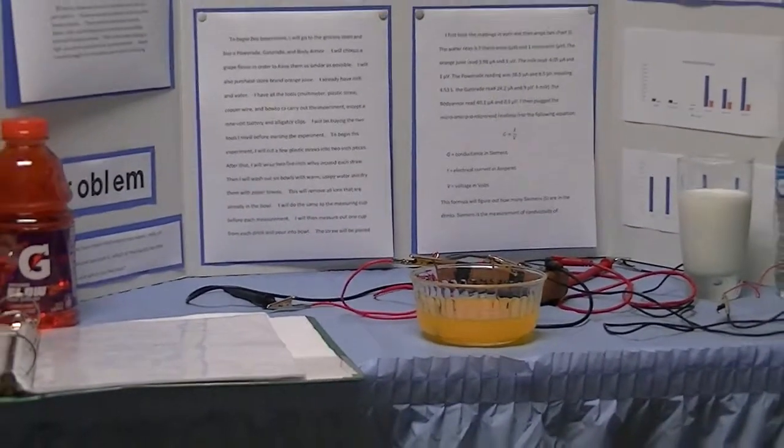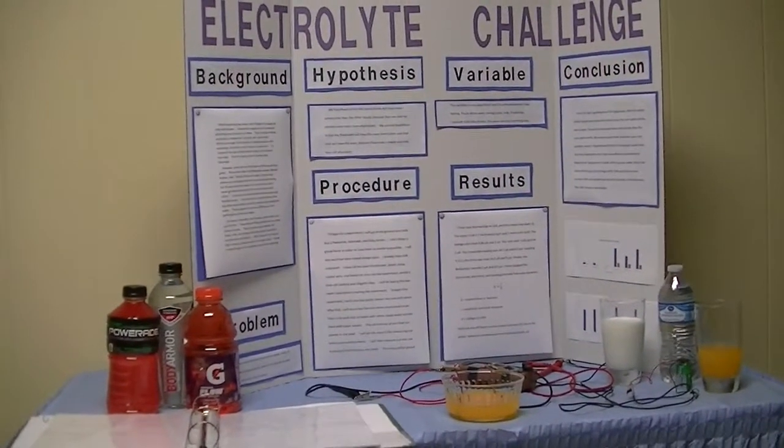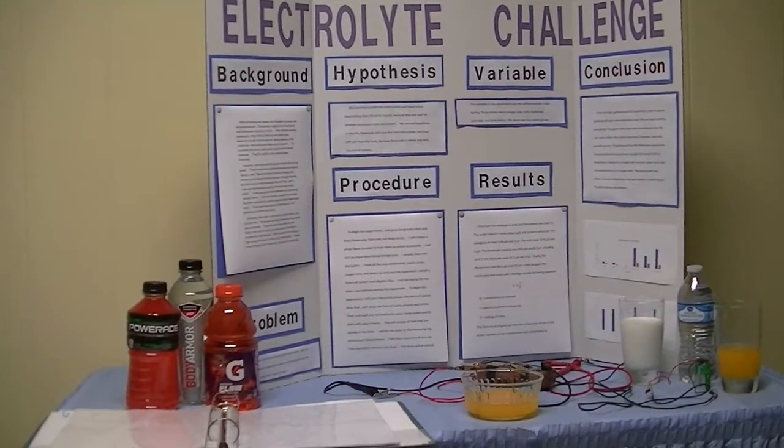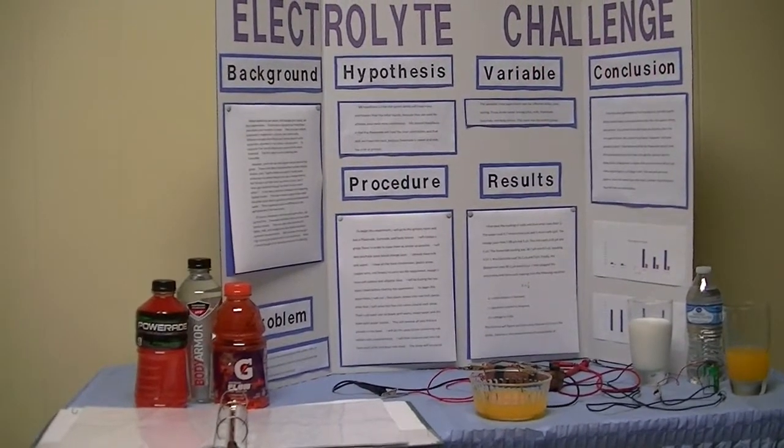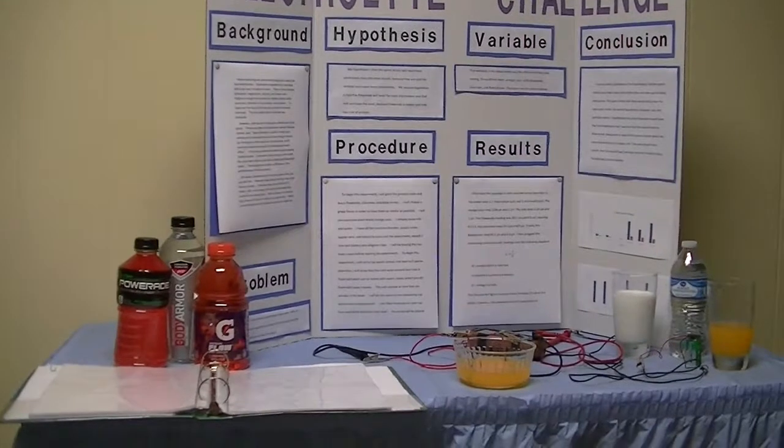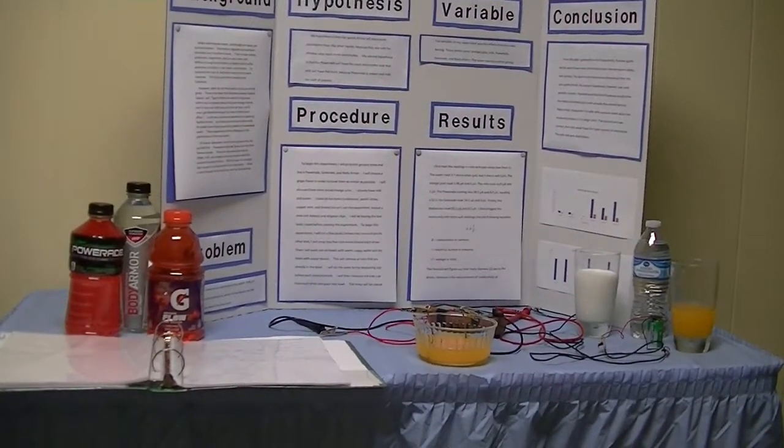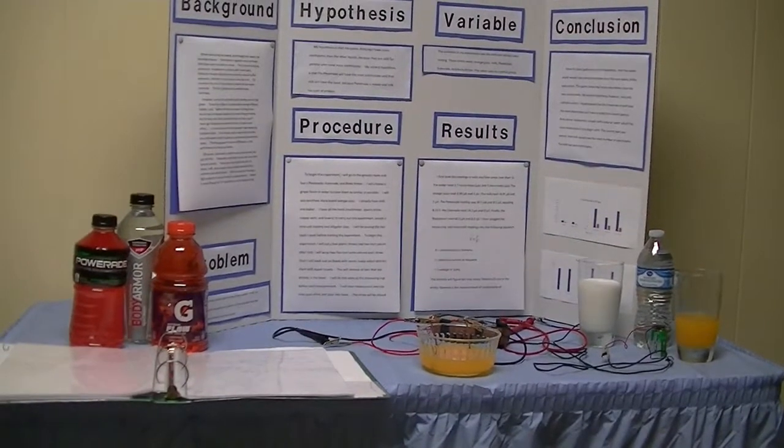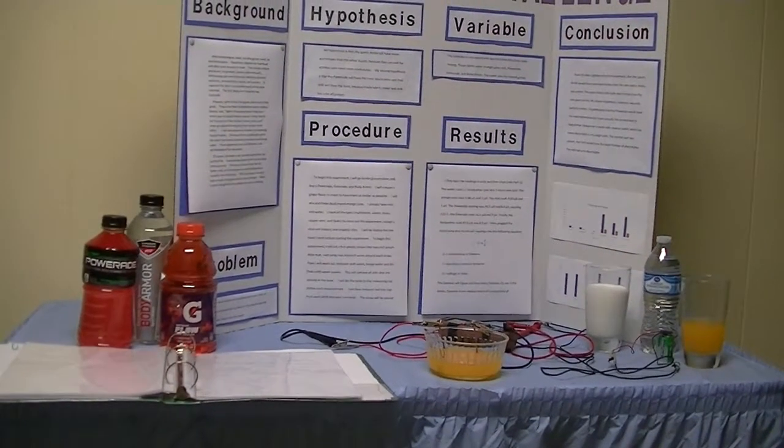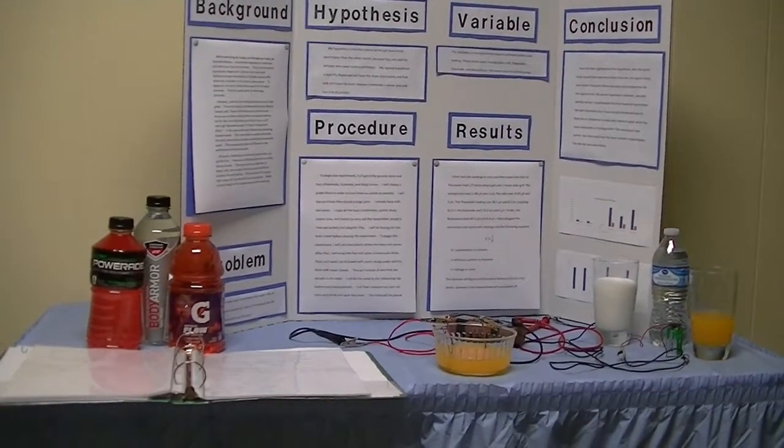For the primary results, the water read 3.7 microamps and 1 microvolt. The orange juice read 3.98 microamps and 1 microvolt. The milk was a negative 4.05 amps and 1 microvolt. The Powerade was 38.5 microamps and 8.5 microvolts. The Gatorade was 24.2 microamps and 9 microvolts. And finally, the body armor was 40.1 microamps and 8.5 microvolts.